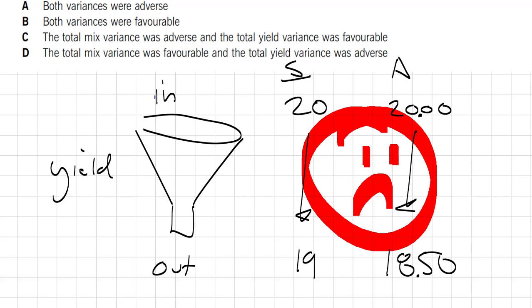So which combination from the solution works for us? The mix was favorable. Yield was adverse. The answer is D.